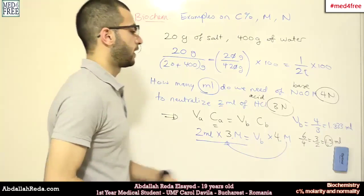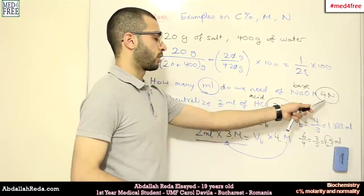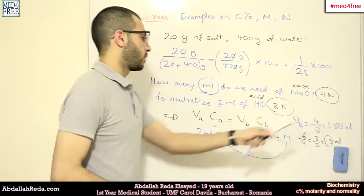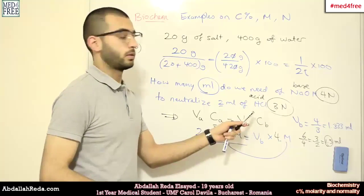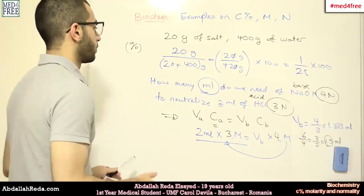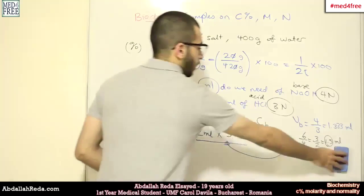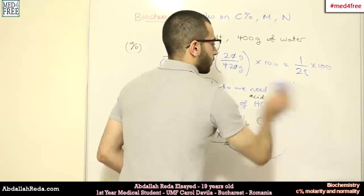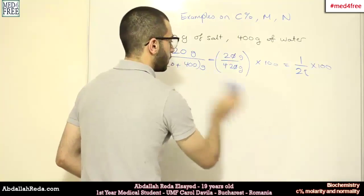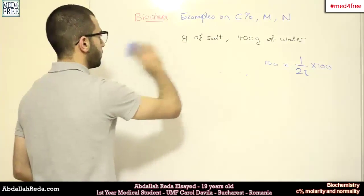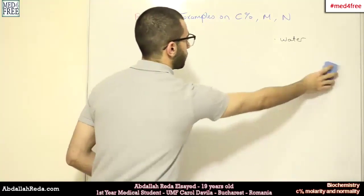So 1.5 milliliters of 4 normal sodium hydroxide can neutralize 2 milliliters of 3 normal hydrochloric acid. These are very simple questions, but it just gets a little bit more complex when the methods of measurement which are used are different.